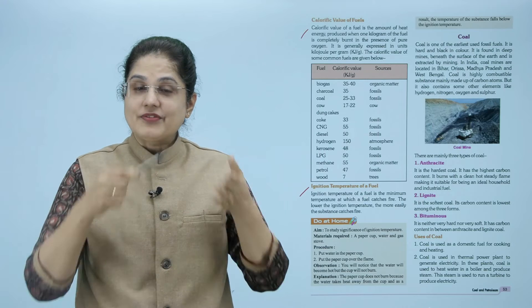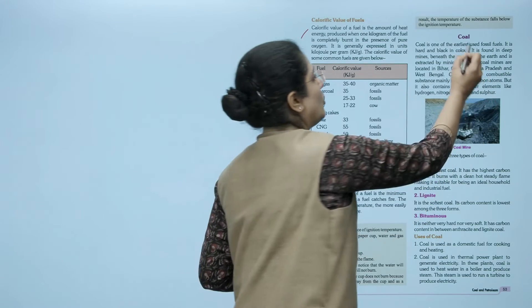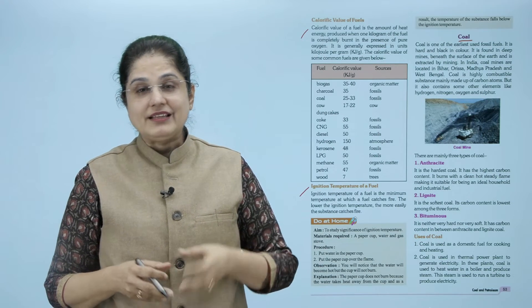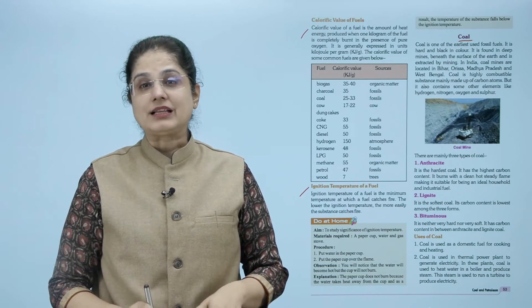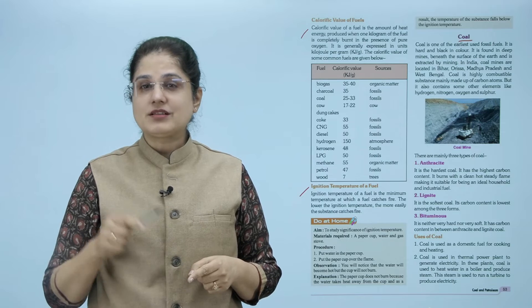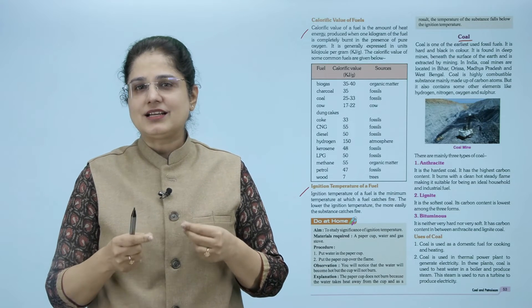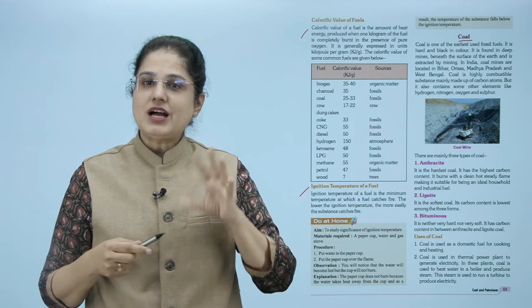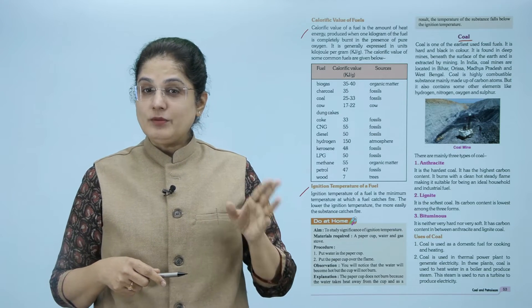Now we come to coal। Coal याने koila - यह सबसे पहले use किया जाने वाला fossil fuel है। यह hard और black color का होता है और earth में बहुत deep में मिलता है, mining से extract किया जाता है। India में जो coal mines हैं वो Bihar, Orissa, Madhya Pradesh और West Bengal में located हैं। Coal highly combustible substance है क्योंकि यह mainly carbon atoms से बनता है, लेकिन इसके अंदर कभी-कभी hydrogen, nitrogen, oxygen और sulfur जैसे elements भी होते हैं।